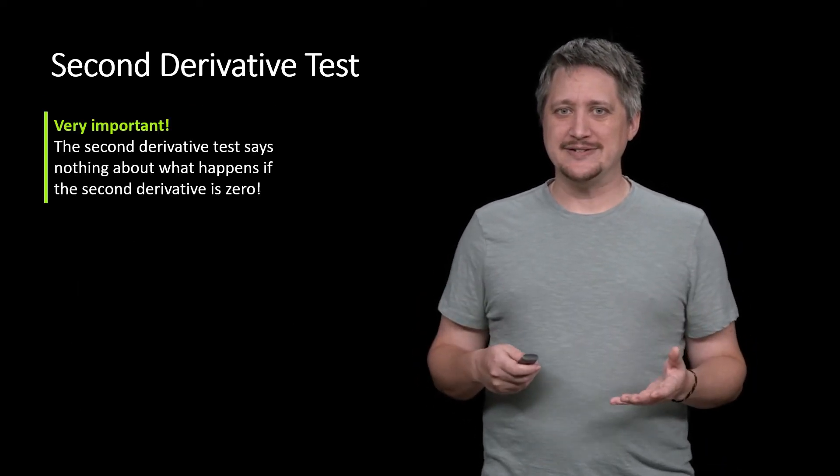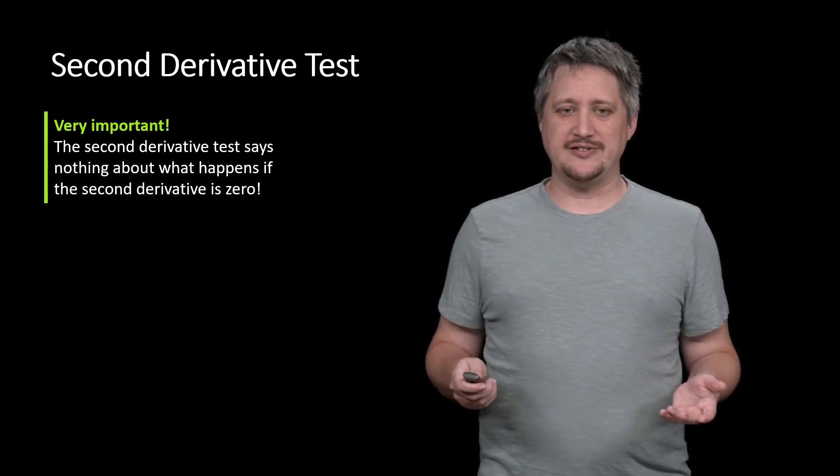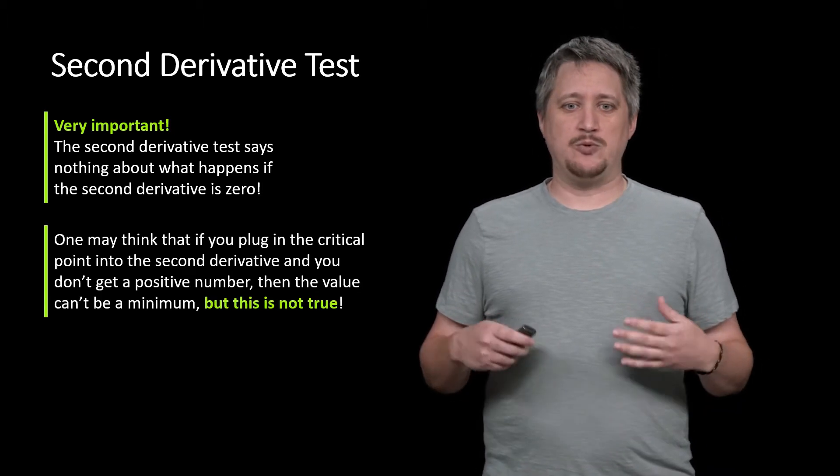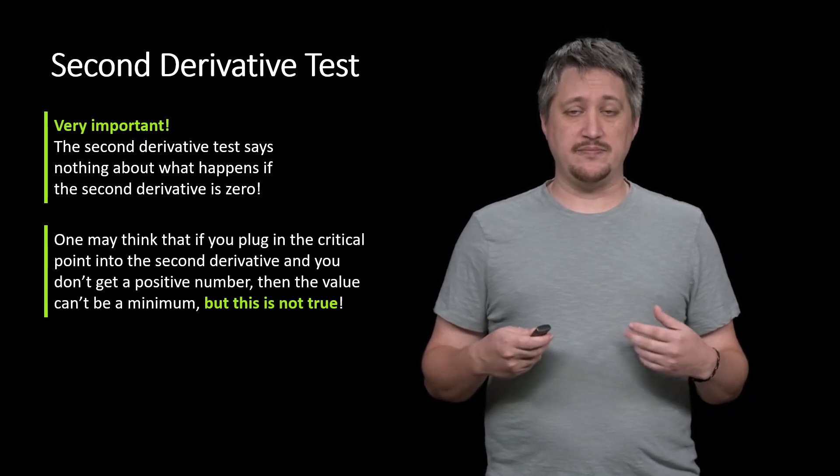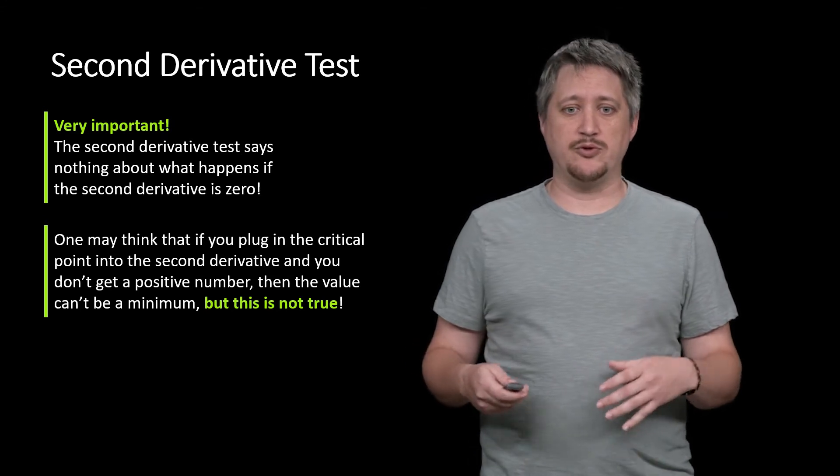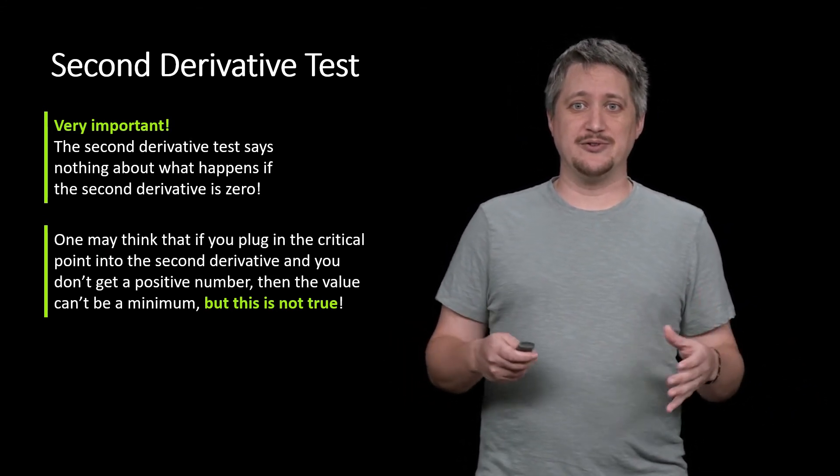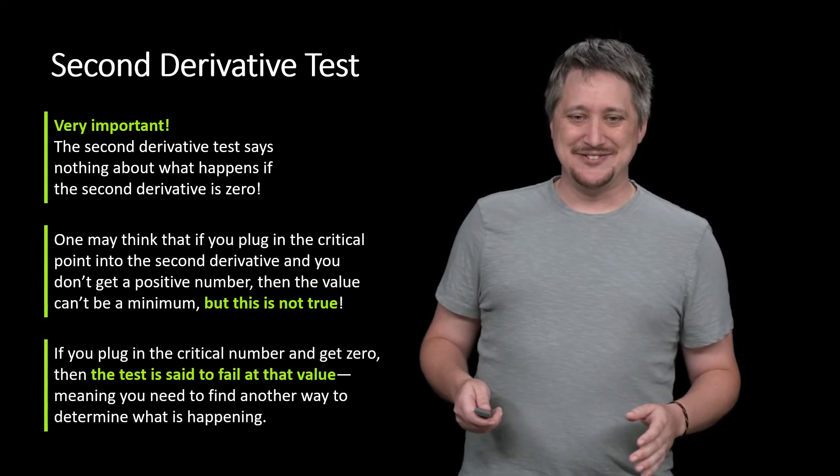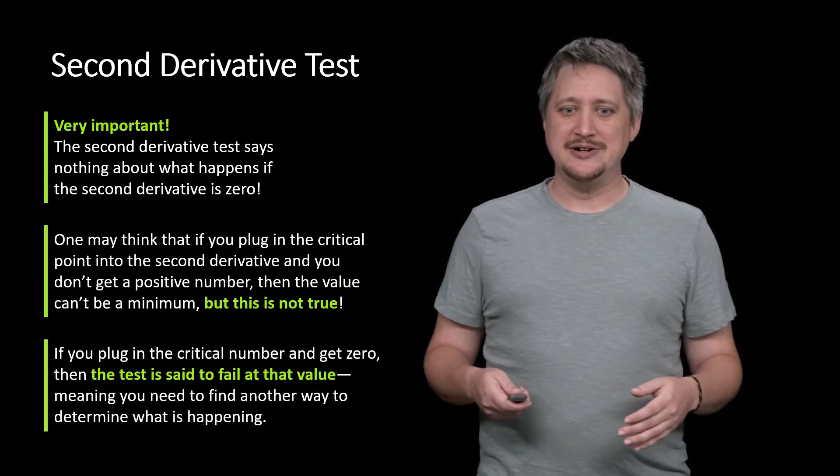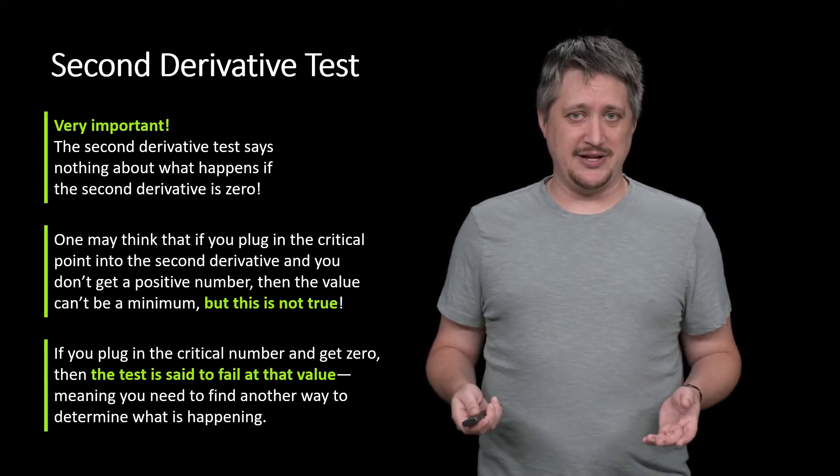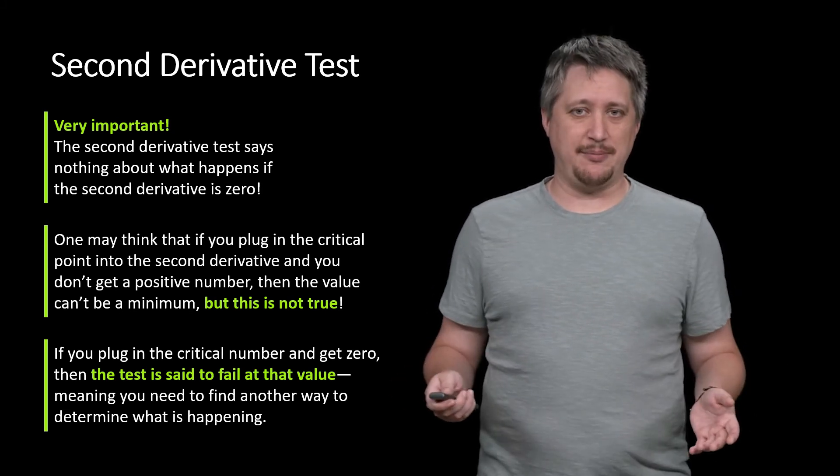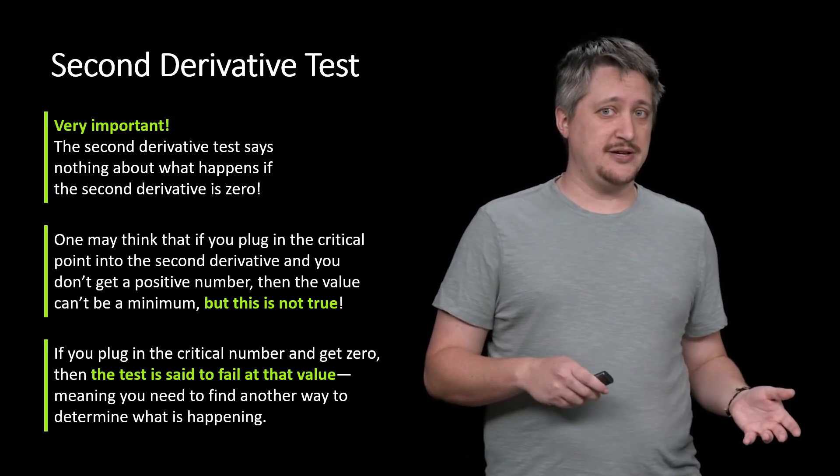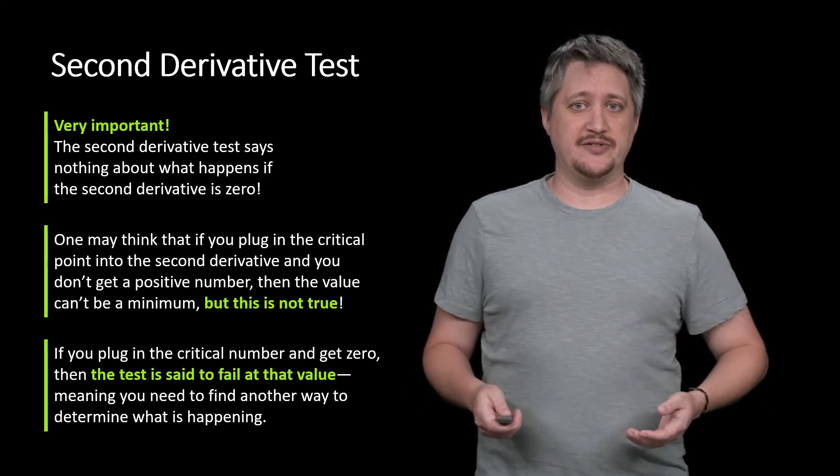Very importantly, the second derivative test says nothing at all about what happens if you get zero. One may think if you plug in a critical point into the second derivative, if you don't get a positive number then it can't be a minimum, or if you don't get a negative number it can't be a maximum. So getting zero is none of those, so it must not be an extrema. This is an understandable thought process, but it's not true. If you plug in a critical number and get zero, then the test is said to have failed at that value, meaning it tells you nothing at all. It could still be a maximum, could still be a minimum, might be neither. You have no way of knowing from the second derivative test.